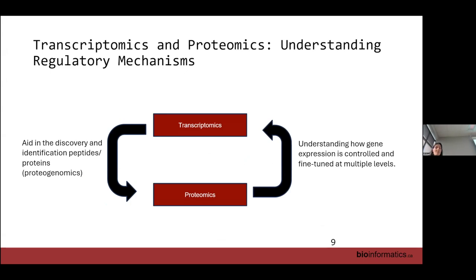We can also better understand regulatory mechanisms by integrating transcriptomics and proteomics — this is a very popular approach. Traditionally, transcriptomics has been used to help discover new proteins or peptides for proteomics data, a field called proteogenomics. But proteomics can also help the transcriptome, because even if a gene is expressed it doesn't mean the protein will be expressed. This helps understand the fine-tuning at that level.